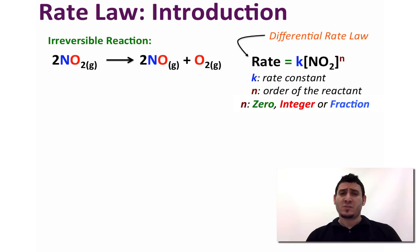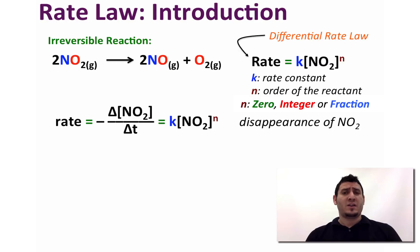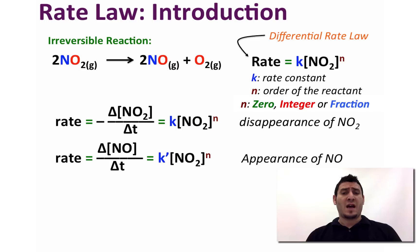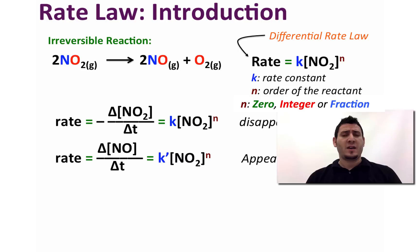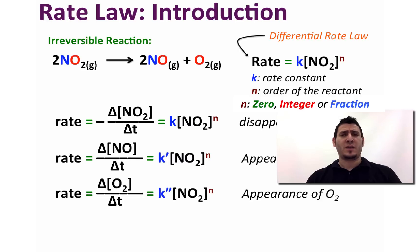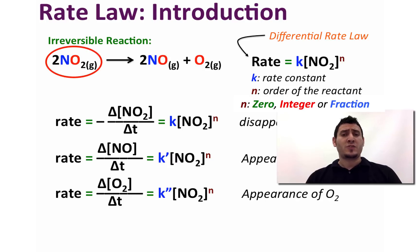The rate can be determined in terms of a reactant or product, as mentioned previously. As you can see, the rate of NO₂ can be calculated from the change in concentration of NO₂, the rate of appearance of NO can be determined from the change in concentration of NO, and the rate of appearance of O₂ can be calculated from the change in concentration of O₂.